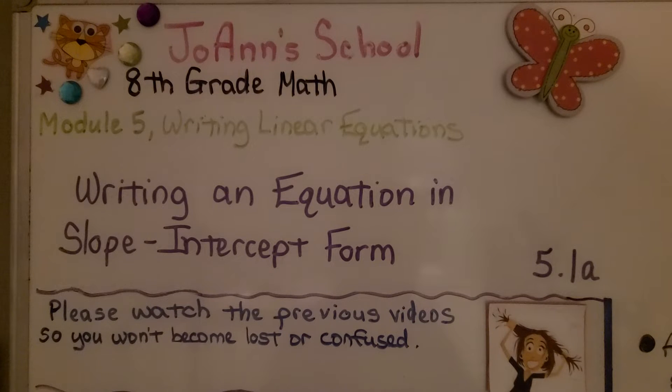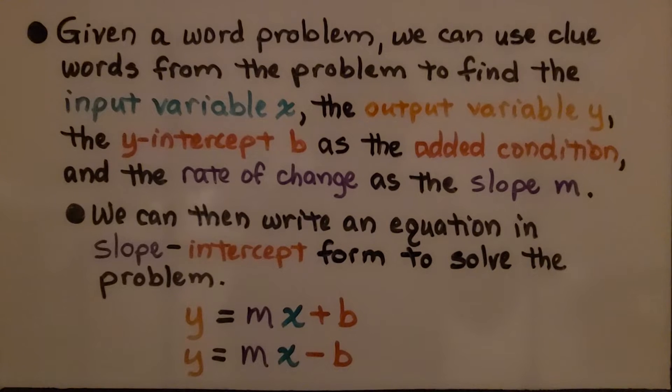Writing an equation in slope-intercept form, this is lesson 5.1a. Given a word problem, we can use clue words from the problem to find the input variable x, the output variable y, the y-intercept b as the added condition, and the rate of change as the slope m.